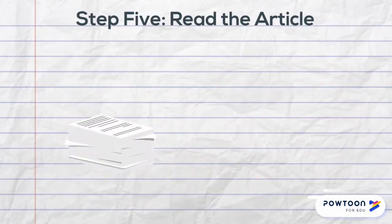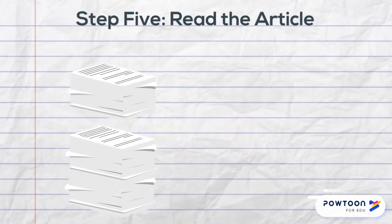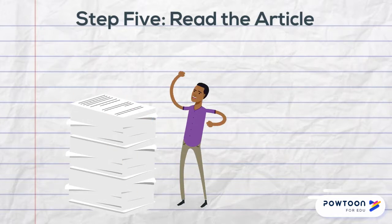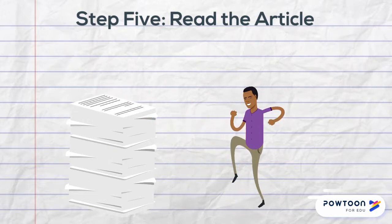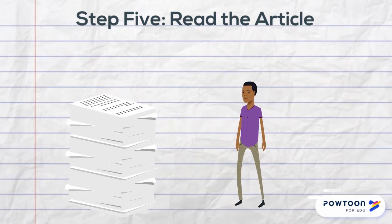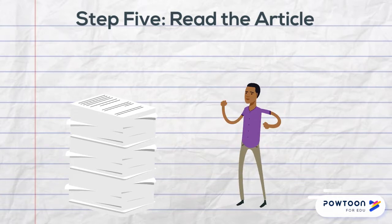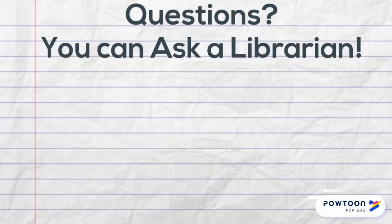Step 5: Read the article. Finally, you will want to read the article. By following the previous steps, you have a good idea which parts of the article you should read most closely and which parts you can skim. This will make reading the article easier.